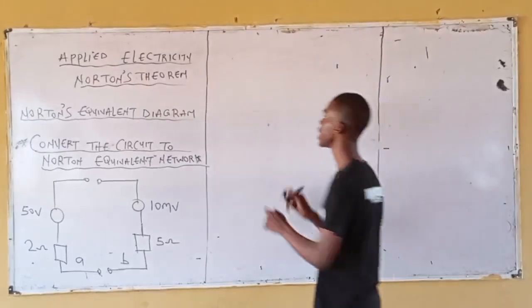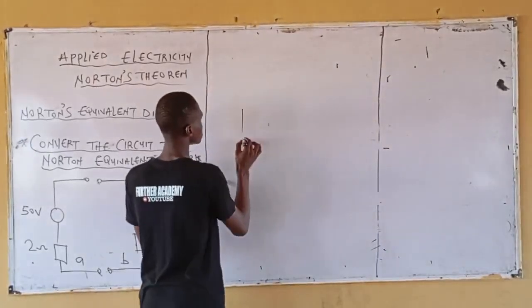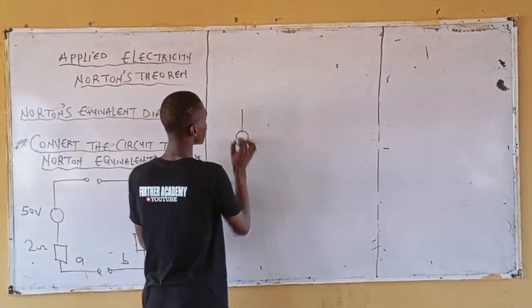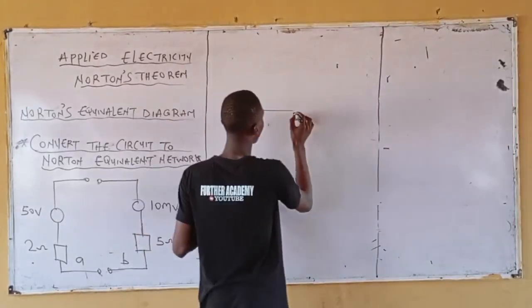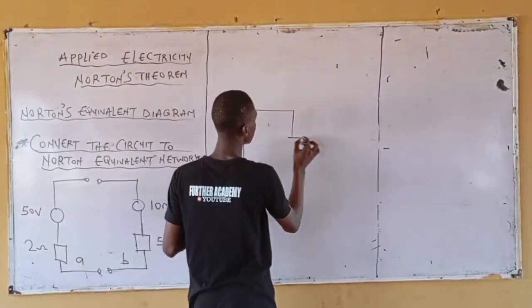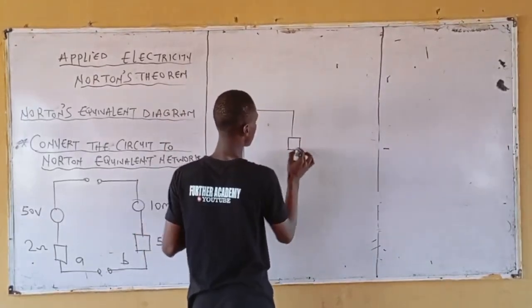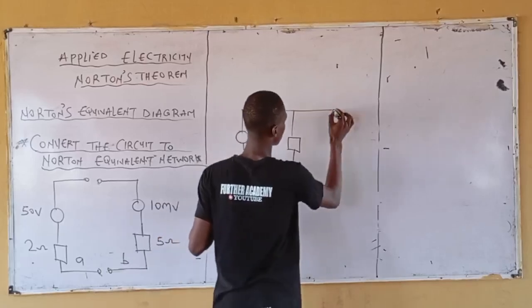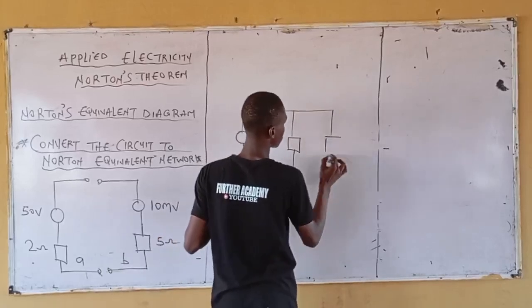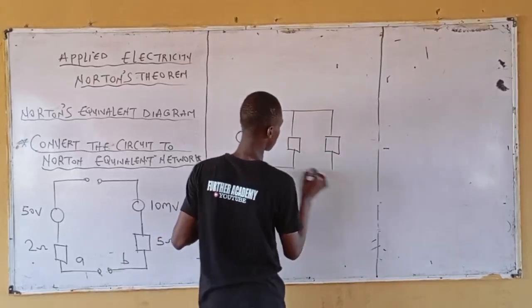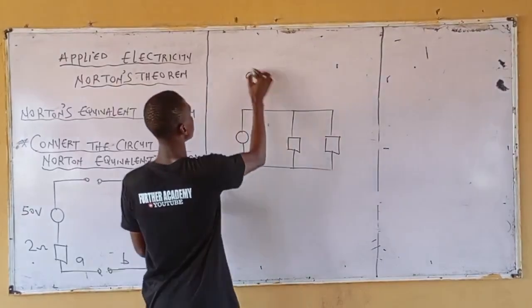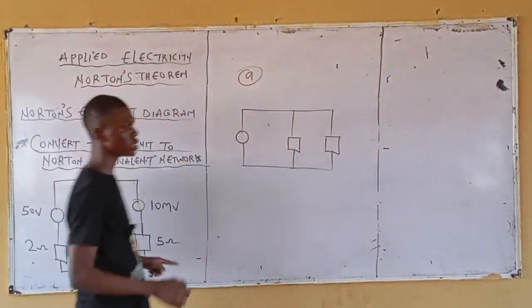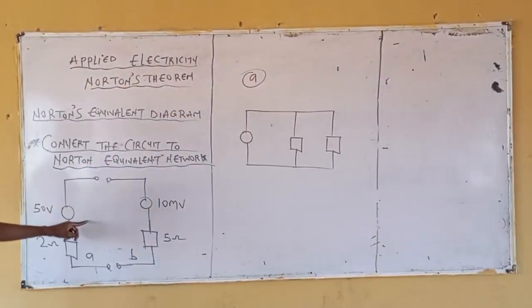Let's draw a Norton diagram. This diagram is a combination of two sections.